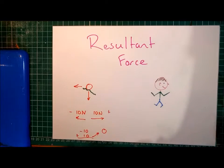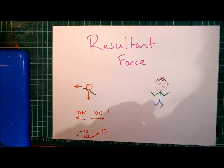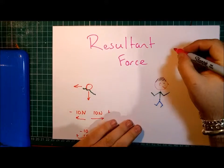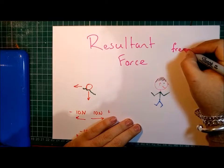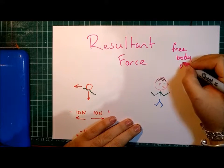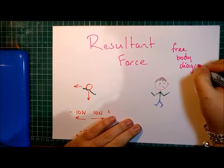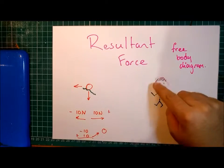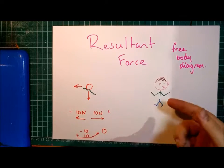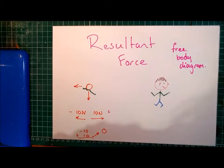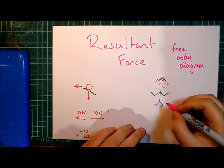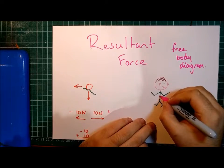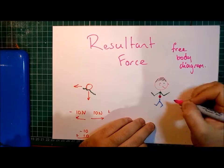Now, there's a particular type of diagram that physicists use a lot to help us visualize the forces acting on an object, and that's called a free body diagram. In a free body diagram, rather than drawing the whole complexity of an object like this running person here, you simply draw a dot at the center of mass of that object to represent the object itself.